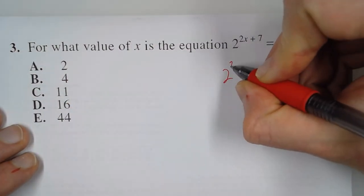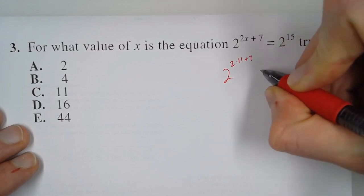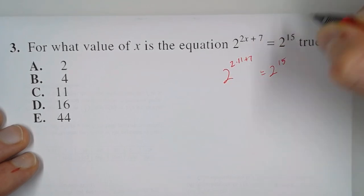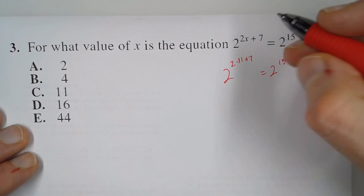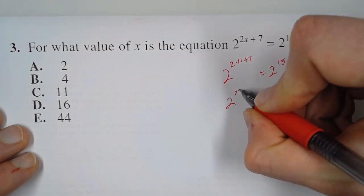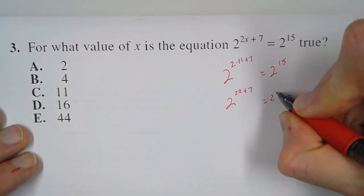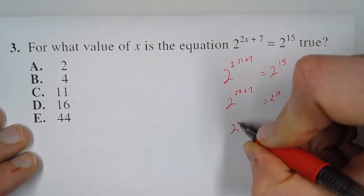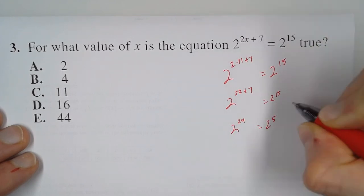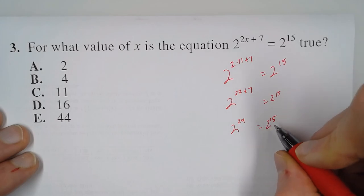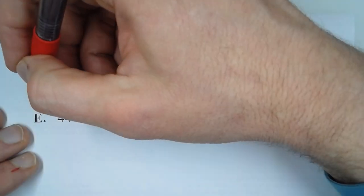So 2^(2×11+7) = 2^15. 2 times 11 is 22, plus 7. So 22 plus 7 gives 2^29. Now 2^29 is not equal to 2^15, so that is wrong.